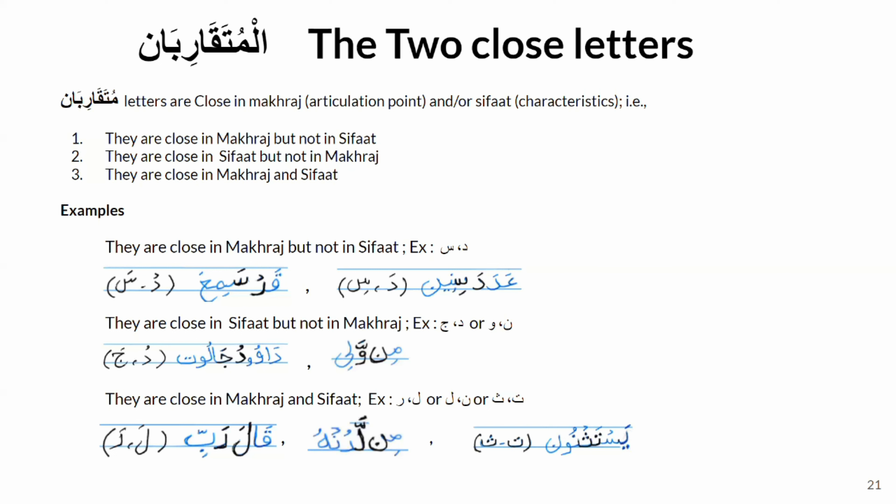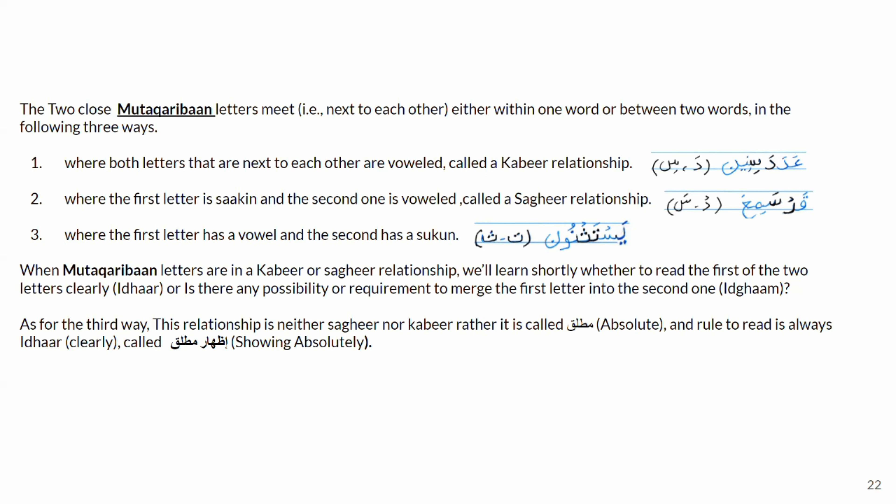Letter noon and lam are close in both makhraj and sifat — they share the letters of dawsat, jahar, istifal, infitah, and tarqiq, differing only in inhiraf and gunna. The other example is letter lam and letter raw: going toward the tip of the tongue, first comes lam, then raw, then noon. So lam and raw are not exactly the same place but are quite close in makhraj, and they share all characteristics except tikrar, which belongs only to raw. So they are close in both makhraj and sifat.